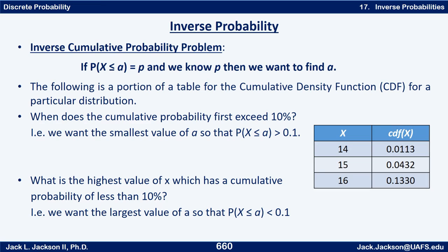Let's look at an example. The following is a portion of a CDF table for a particular distribution — a cumulative distribution function. The X values are given on the left and the corresponding CDF values are on the right. Those CDF values are the probability that X is less than or equal to the given value in the left column. For example, X equals 14 and the CDF value — the probability that X is less than or equal to 14 — is given there to four decimal places.